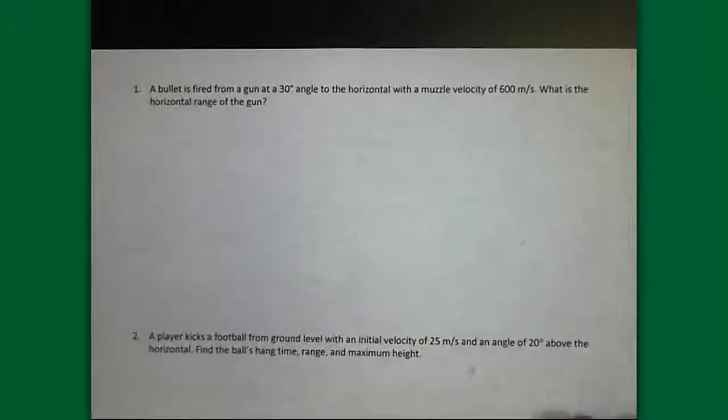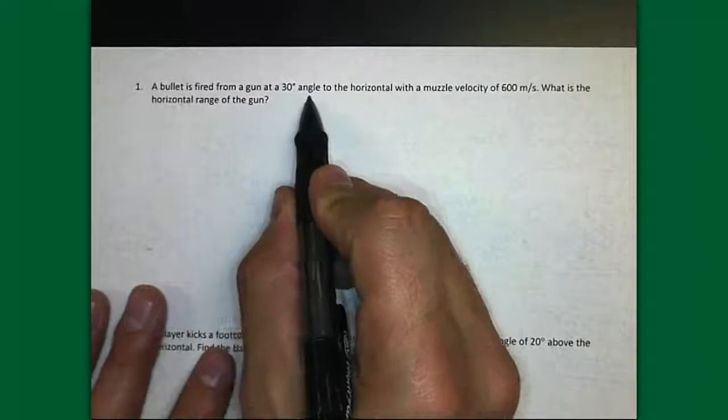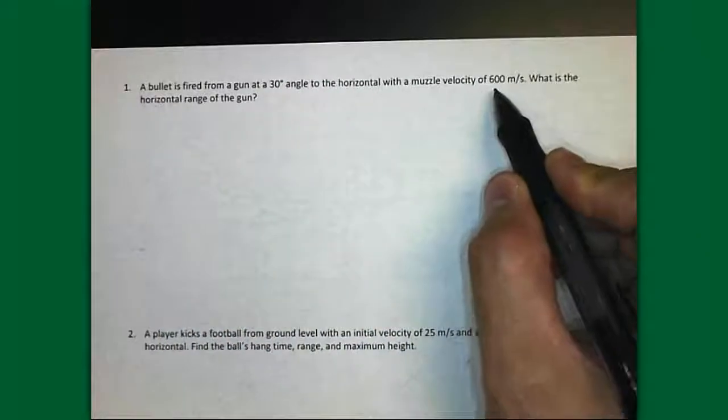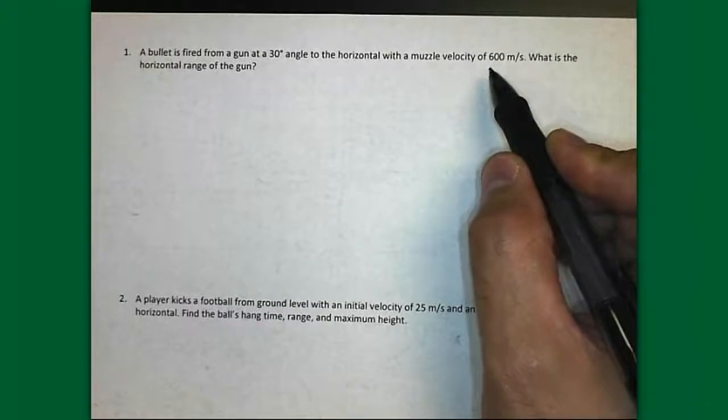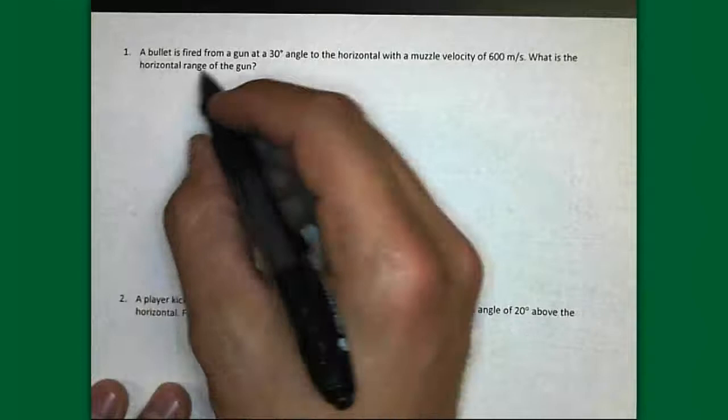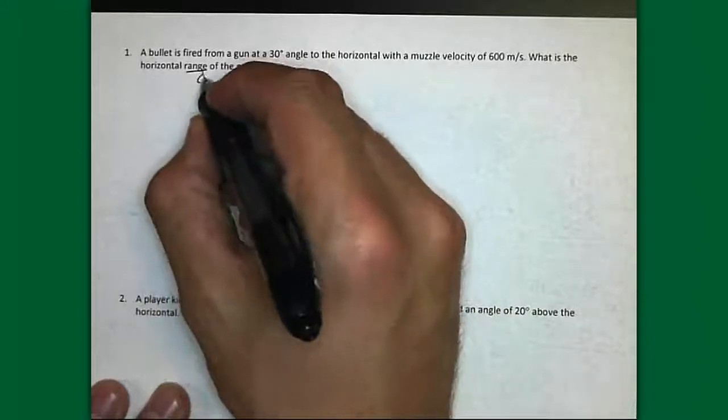Alright, let's look at this problem and solve it and go a little bit quicker this time. A bullet is fired from a gun at a 30 degree angle to the horizontal with a muzzle velocity of 600 meters per second. It might sound similar to a problem we had before, except now it's launched at an angle. We want to know the horizontal range of the gun. Remember when you see this word range, you know you're looking for DX.